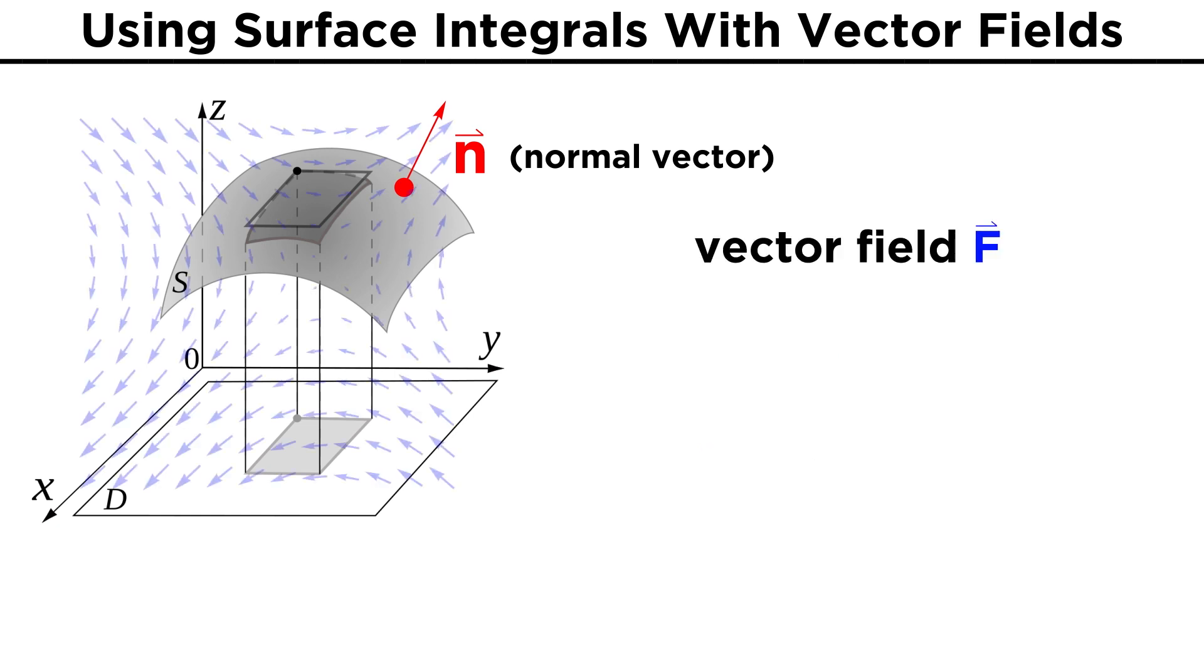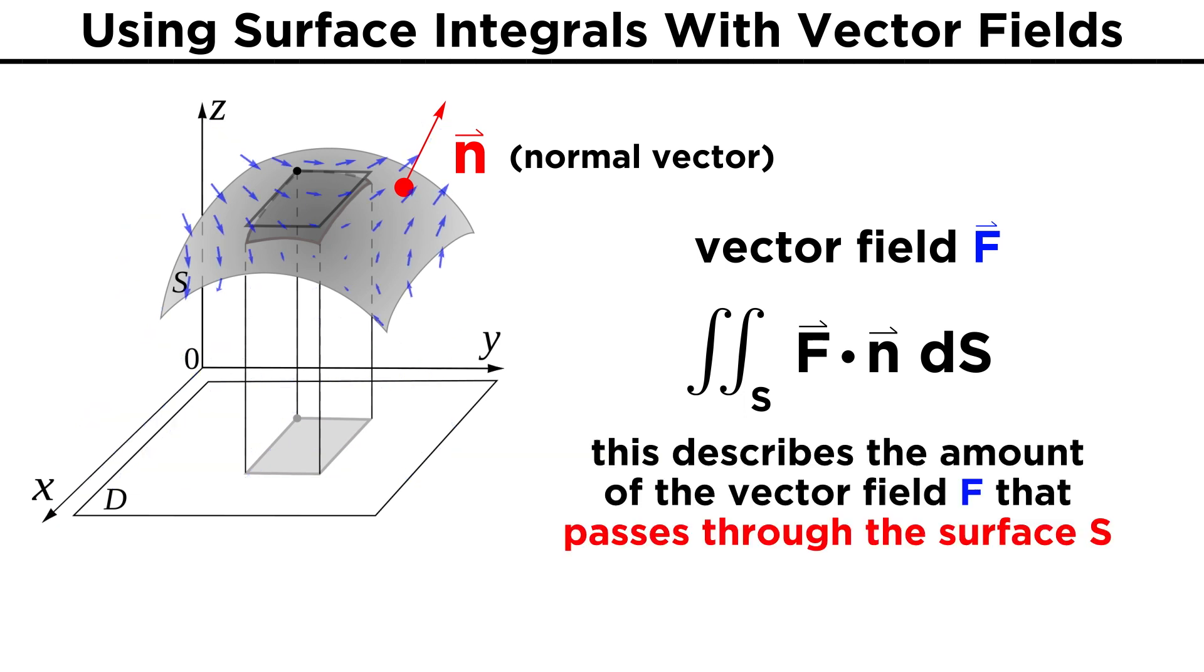Now if we have a vector field F permeating space, the surface integral of F over the surface S will be F dot the normal vector N dS. This calculation ends up describing the amount of the vector field F that passes through the surface S, also called the flux of F across S.